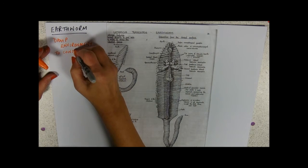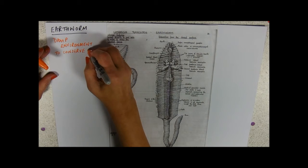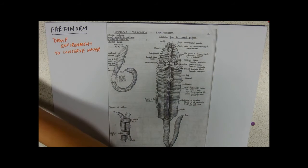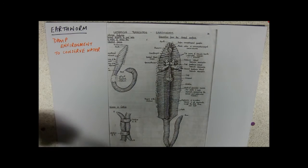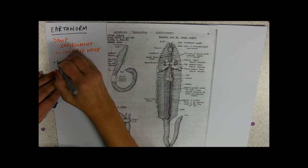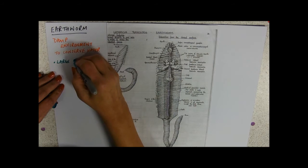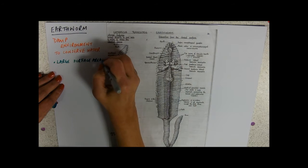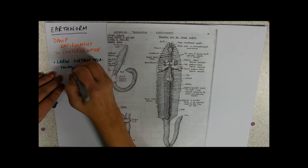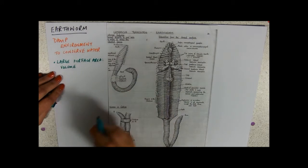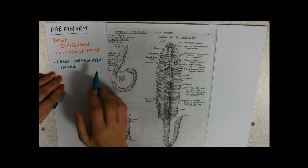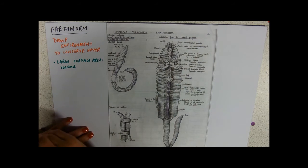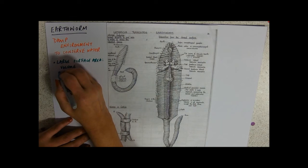As far as its adaptations go, what are we looking at here? We're looking at a large surface area to volume ratio. I'm not writing 'ratio'—it's very often written down, but I don't think you need to. You've got the little two dots in there to mean I'm looking at a ratio. So large surface area to volume ratio so it can do its gas exchange.